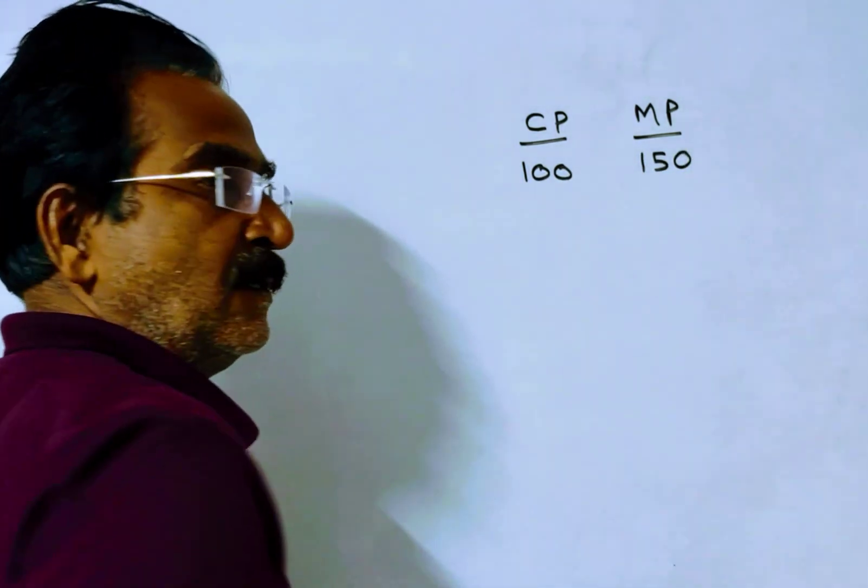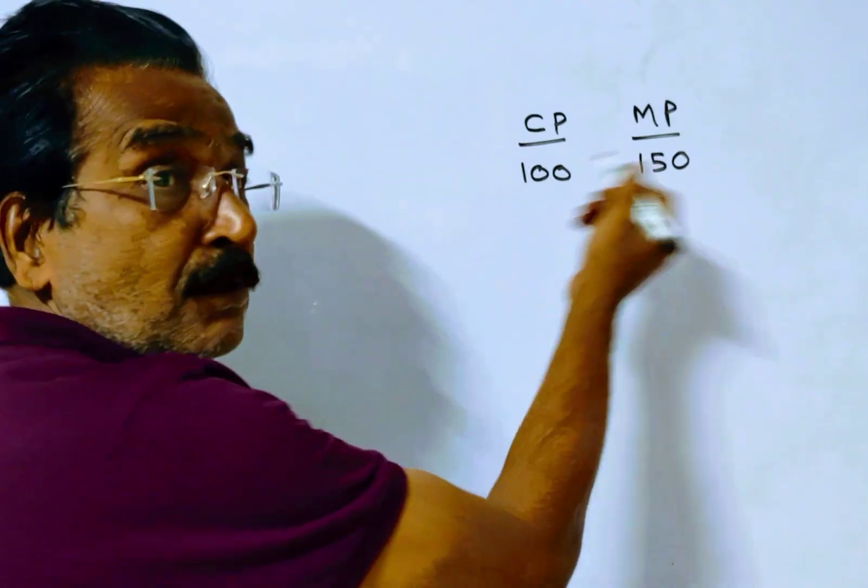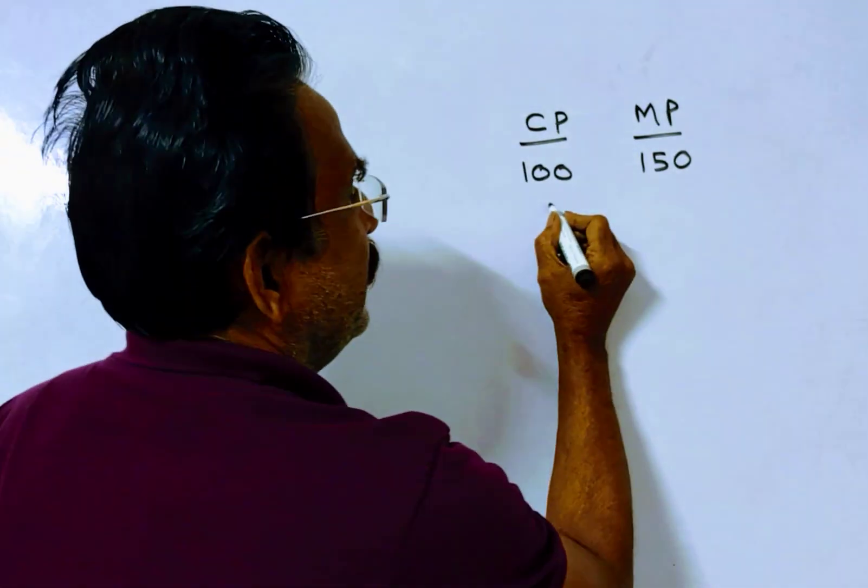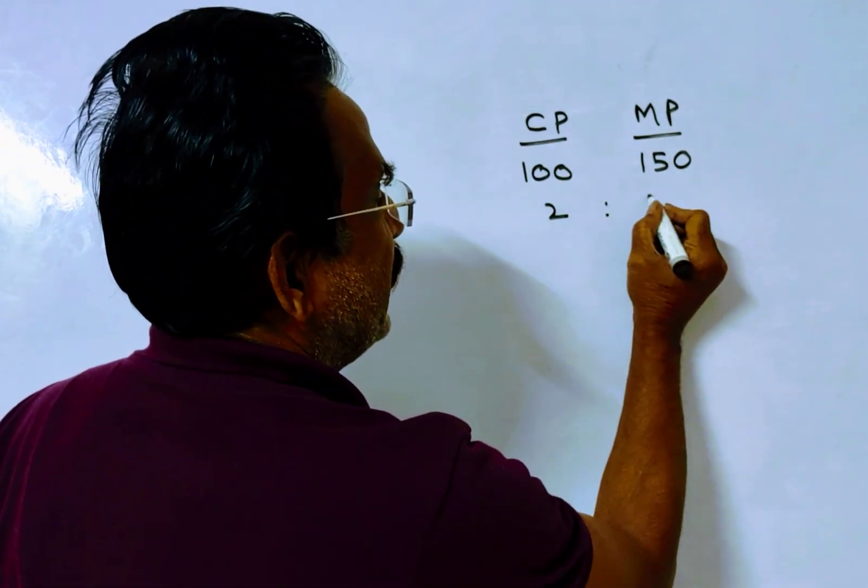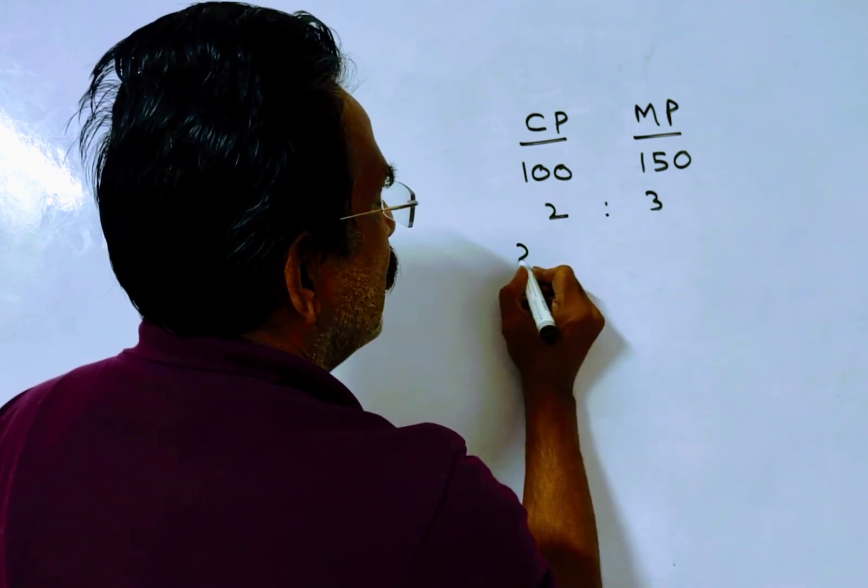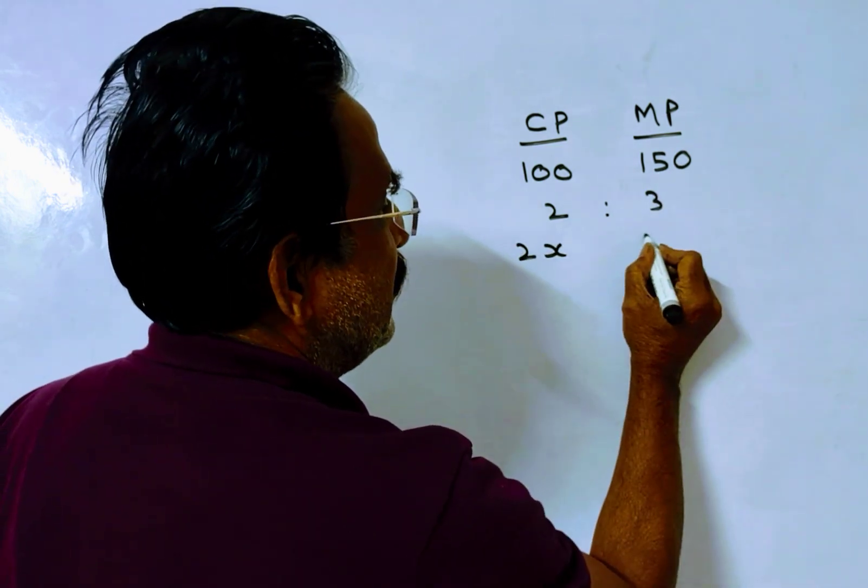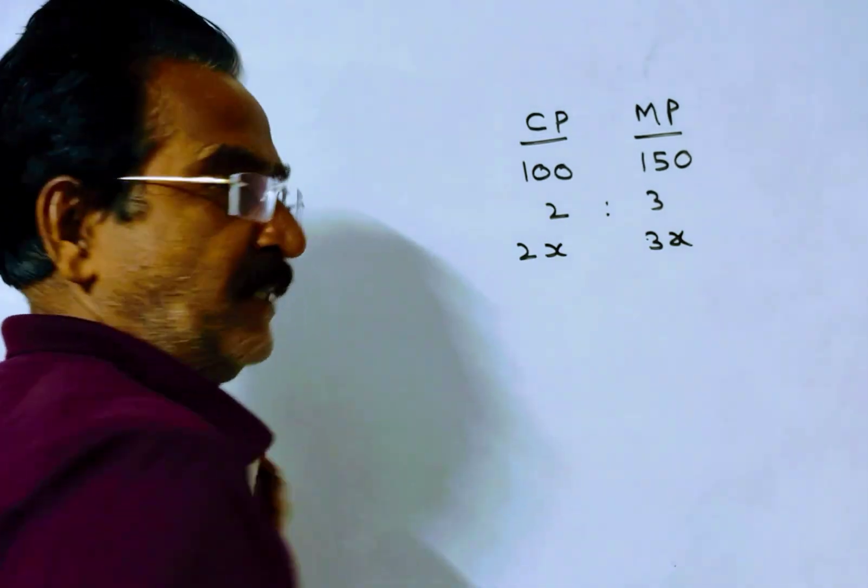So the ratio of cost price and market price is 2:3. Cost price is 2x, market price is 3x.